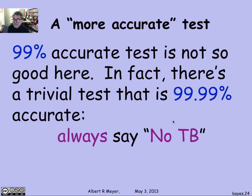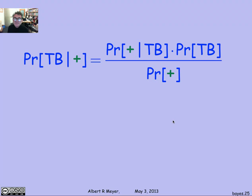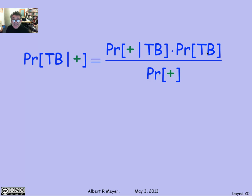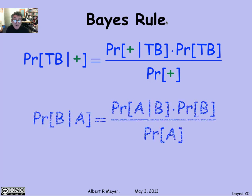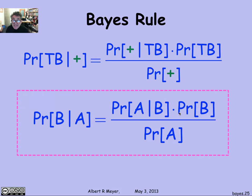So it sounds as though this test is really worthless, but it's not. The basic formula we used here — figuring out the probability of TB given that the test said you had TB, in terms of the inverse probabilities we knew, namely the probability that the test came in positive given that you had TB — is an example of a famous rule in probability theory called Bayes' Rule or Bayes' Law. Stated in terms of arbitrary events A and B, it expresses the probability of B given A in terms of the probability of A given B and the probabilities of A and B independently. It's a quite straightforward law to derive and prove.